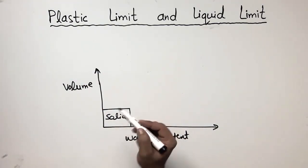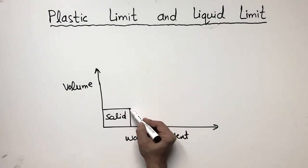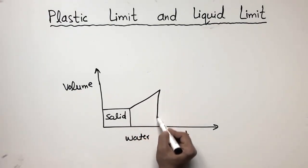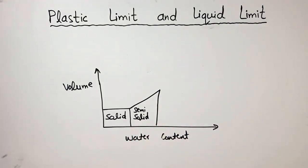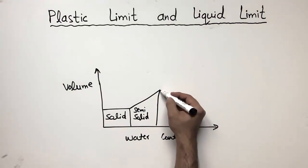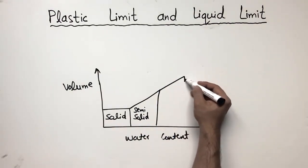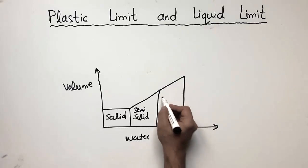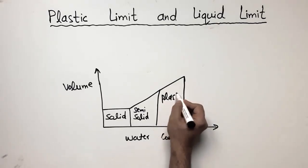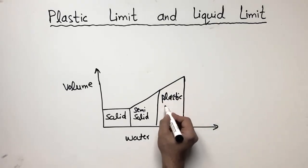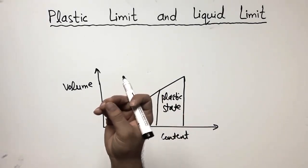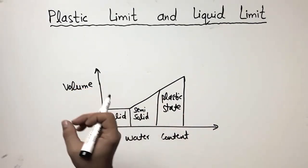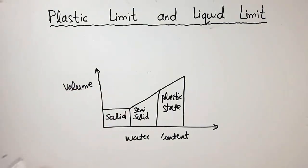After that, we add some water. We call this stage the semi-solid. After that, we add more water to the soil, which causes the soil to become plastic. In the plastic state, the soil is now workable enough — you can work with the soil because of the addition of more water.